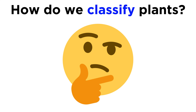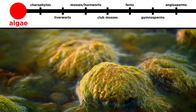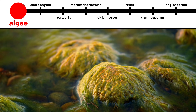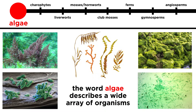So how do we organize and classify plants? If we start at the beginning of the evolutionary history of plants, we can look at algae. Algae is a term we use to describe a large group of photosynthetic organisms that are not actually all related to one another.